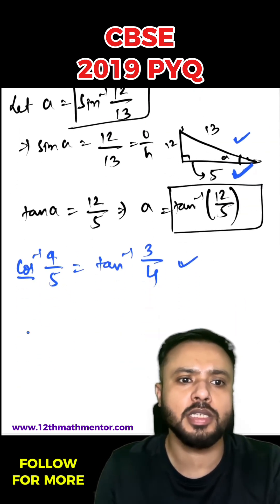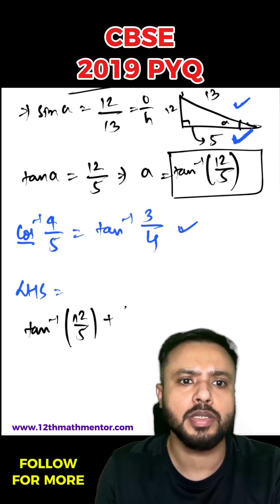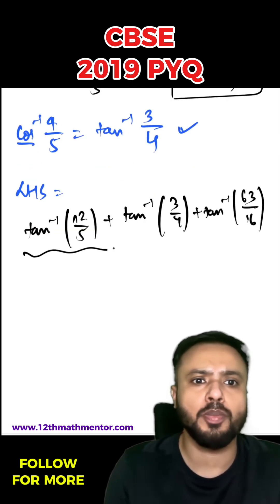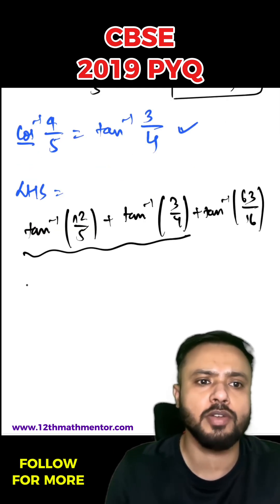Hence I can write this LHS as tan inverse 12 by 5 plus tan inverse 3 by 4 plus tan inverse 63 by 16. Now I'll make a pair of these two and I'm going to use the formula of tan inverse A plus tan inverse B. That's going to be tan inverse A plus B upon 1 minus AB, plus tan inverse 63 by 16.